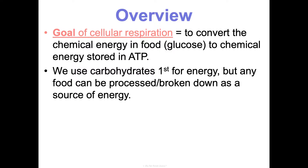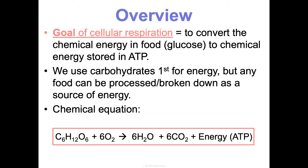Think back to Unit 1 when we learned about the macromolecules. The carbohydrates you eat are our first source for energy and for making ATP, but any of the foods you eat can be processed or broken down as a source for energy. The chemical equation is the recipe that represents the whole process, and it is the opposite of photosynthesis. It's C6H12O6 plus 6O2, going to make 6H2O and 6CO2, and it's going to release energy in the form of ATP. Note: some teachers do not want you to write energy in the equation, so make sure you know what your science teacher wants.